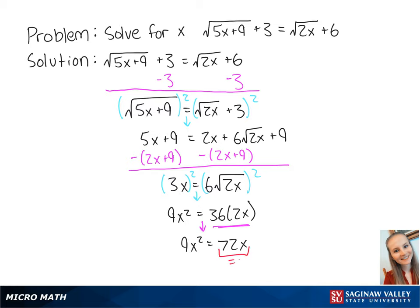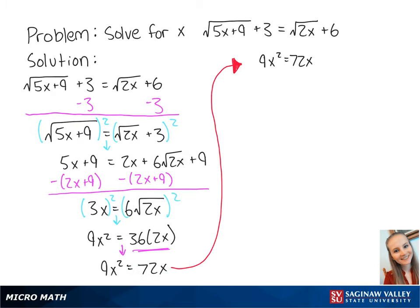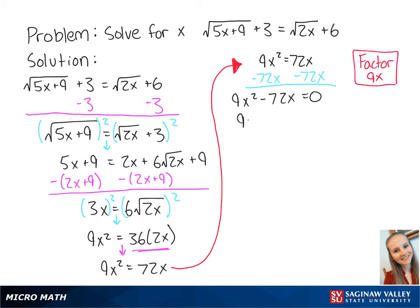If we want to solve for x, we want the right side to be equal to 0, so we're going to subtract 72x from both sides of the equation, giving us 9x squared minus 72x is equal to 0. Here we can factor out a 9x, giving us 9x times x minus 8 is equal to 0.